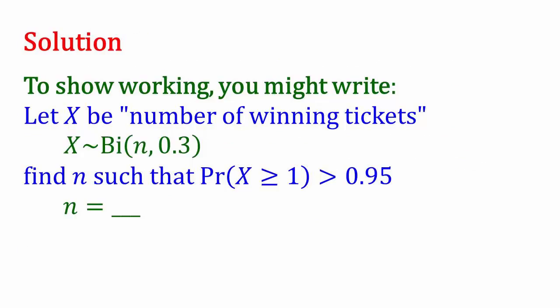First, show your working. This would typically be a two mark question in the exam. The first mark would be obtained by showing the formulation of the problem. So it's always a good idea to have it clear what your random variable is. Let X be the number of winning tickets, so X is binomially distributed with N unknown and P equal to 0.3. That would be sufficient for the assessors to know you'd set up the question correctly, and then you can use whatever method to obtain the answer.